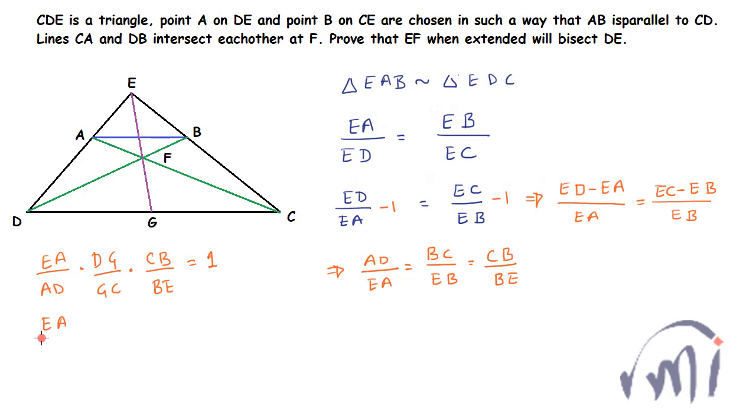So this will become EA divided by AD multiplied by DG divided by GC multiplied by AD divided by EA, and this is equal to 1. EA will cancel this EA, AD will cancel this AD. So DG will be equal to GC.